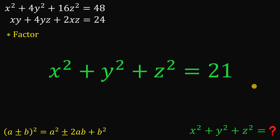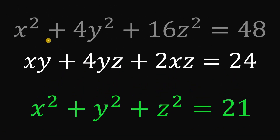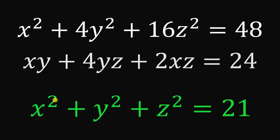This is our answer to this question. Therefore, given these two equations, the numerical value of x squared plus y squared plus z squared is simply equal to 21. And as always, we are done.